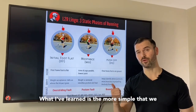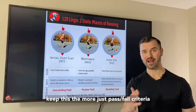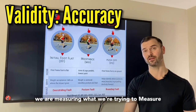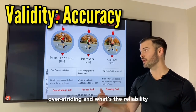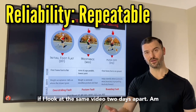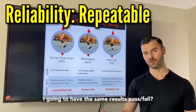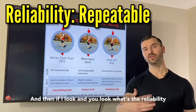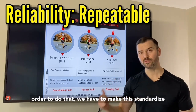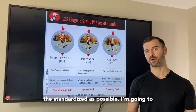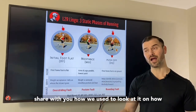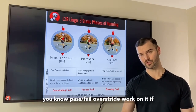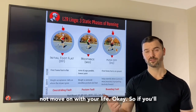What I've learned is the more simple that we keep this, the more just pass-fail criteria that helps improve the validity of it — how accurate we are at measuring what we're trying to measure, overstriding — and what's the reliability. If I look at the same video two days apart, am I going to have the same results, pass-fail? And if I look and you look, do we both have similar answers? So in order to do that, we have to make this as standardized as possible. I'm going to share with you how we used to look at it and how I'm proposing we do it now — so you know pass-fail overstride, work on it, if not, move on.